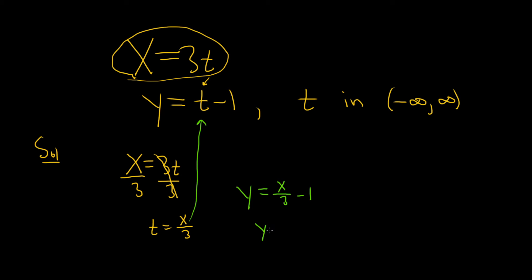If you like, we can write that as one-third x minus 1. This would be the rectangular equation.